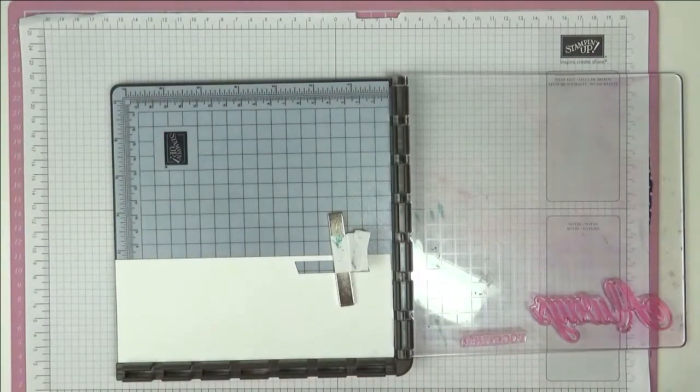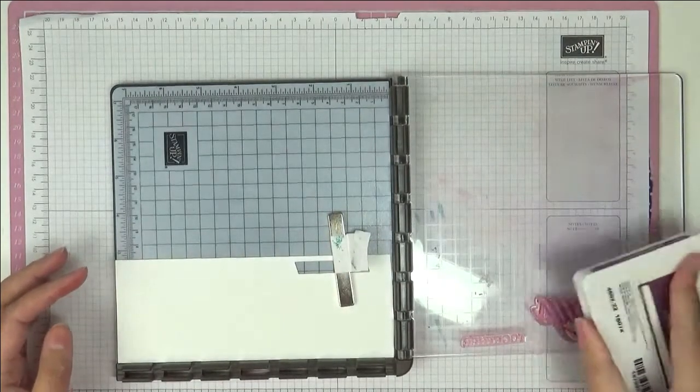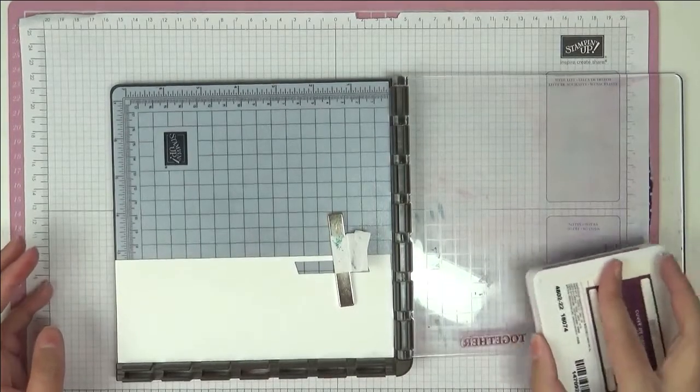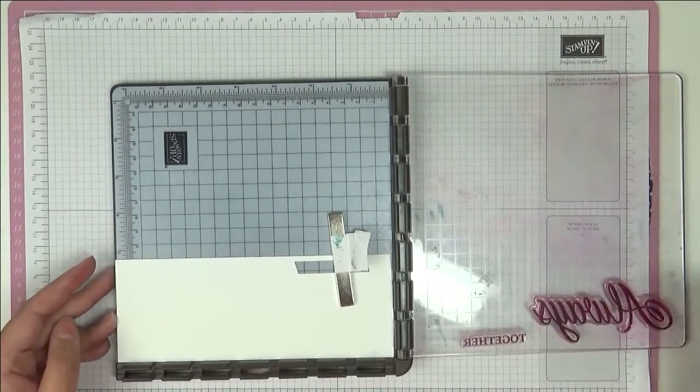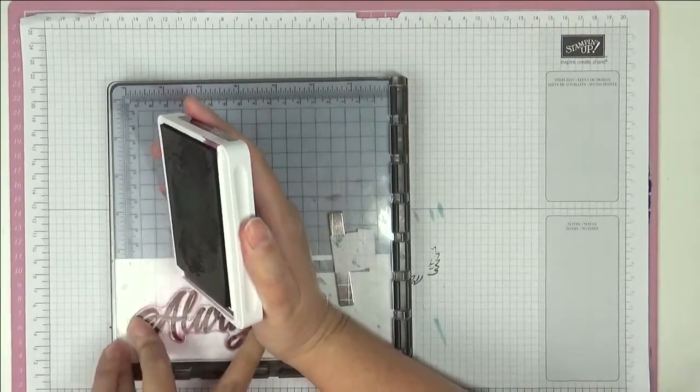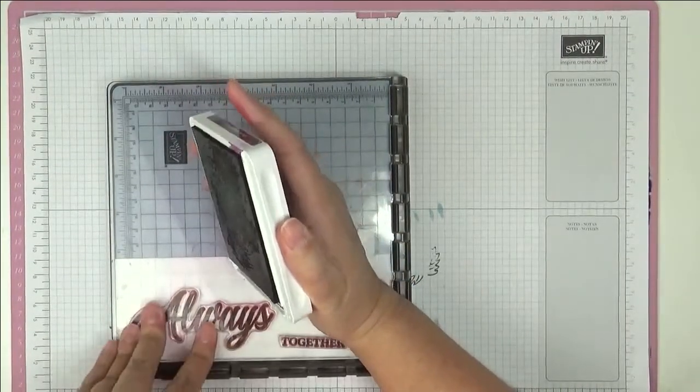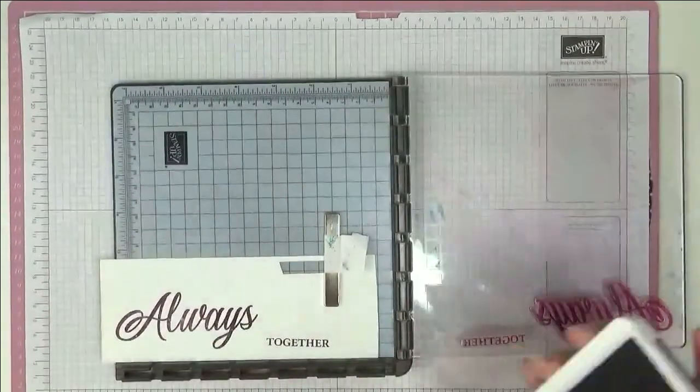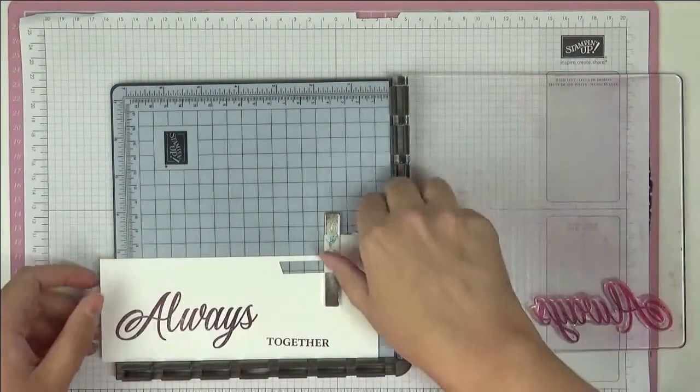We're going to be stamping in Blackberry Bliss ink. I've got here basic white or whisper white cardstock, just some scraps. On the back I've got a piece of adhesive sheet so that when I cut it out it'll be really easy to stick down. I'll just give us a really good press and have good contact.